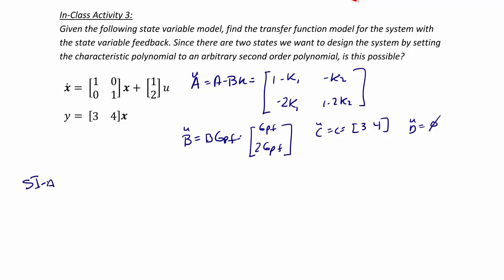sI minus A-tilde is equal to [s minus 1 plus K1, K2; 2K1, s minus 1 plus 2K2].